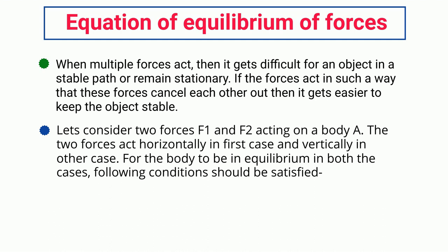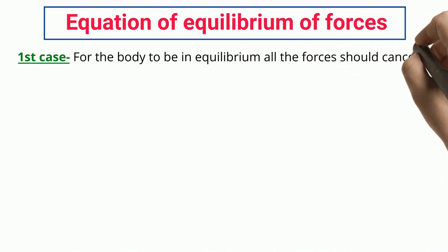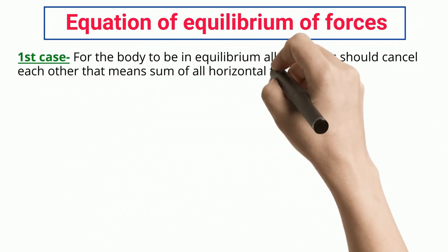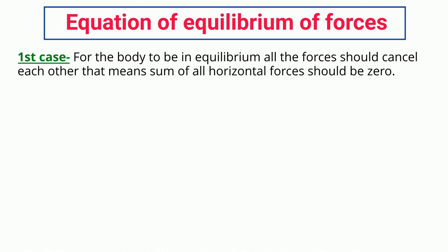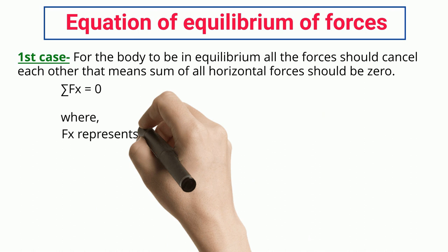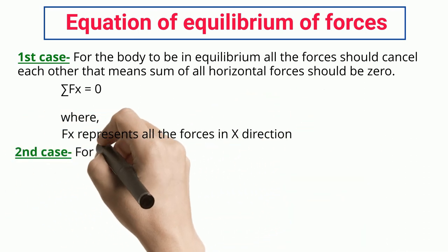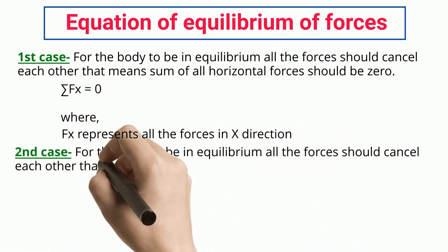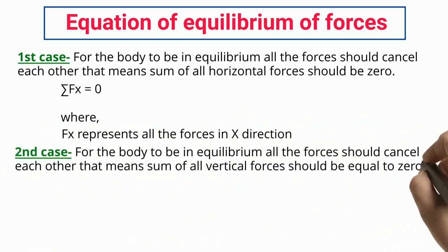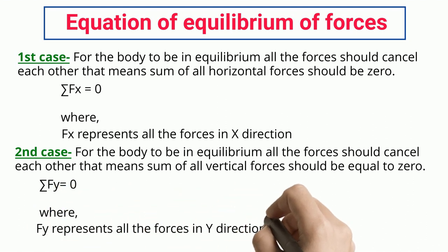For the body to be in equilibrium in both cases, the following conditions should be satisfied. First case: all horizontal forces should cancel each other, meaning the sum of all horizontal forces (Fx) should be zero. Second case: all vertical forces should cancel each other, meaning the sum of all vertical forces (Fy) should be equal to zero.